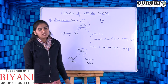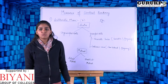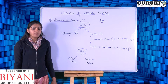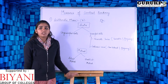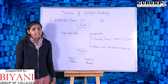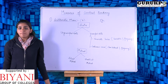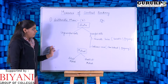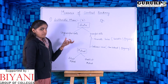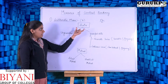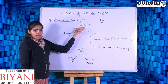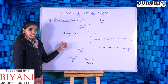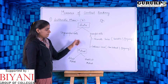Whenever someone asks you to calculate the arithmetic mean, you need to know two things: first, the type of data, and second, the method to be used to calculate the arithmetic mean. There are two types of data: ungrouped data and grouped data.